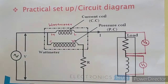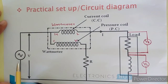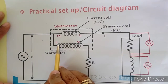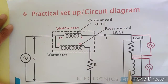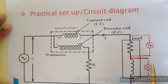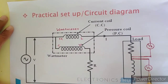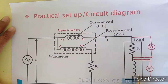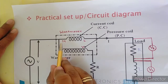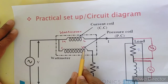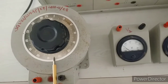This is the circuit diagram for the practical. We use AC supply, then wattmeter, then resistive load, then inductive load, and measure voltage across each. This shows voltage across the resistor and voltage across the inductor. The wattmeter terminals are labeled M, L, C, and V. This circuit is used for the RL series circuit practical.